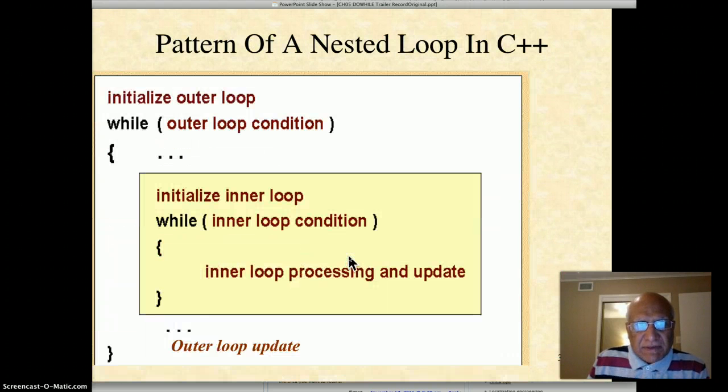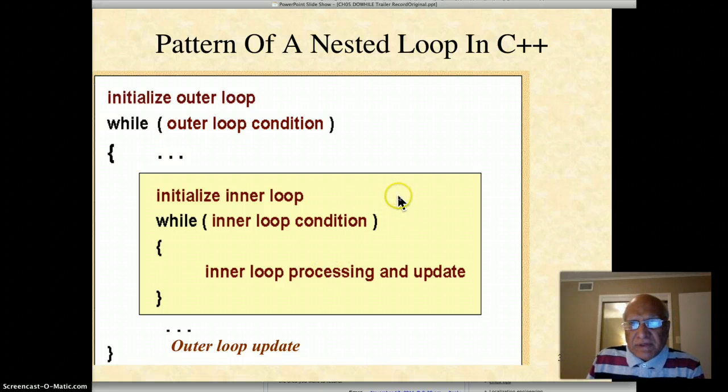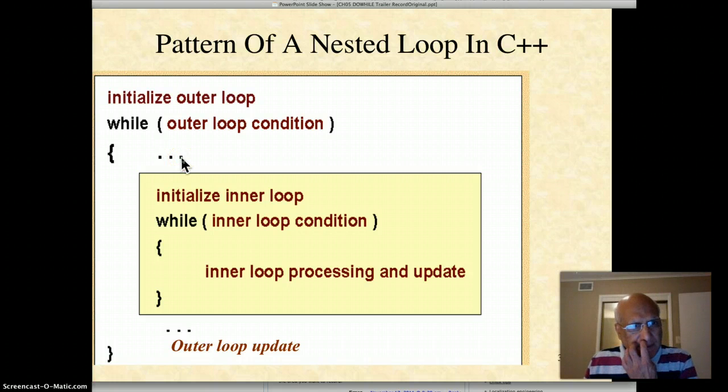In C++, the pattern of nested loops schematically will look something like this. Over here we'll initialize the outer loop or any other variable that needs to be changed inside the outer loop part only. Here's the pretest of the outer loop condition. Then there may be some tasks in the outer loop before the inner loop begins, even.